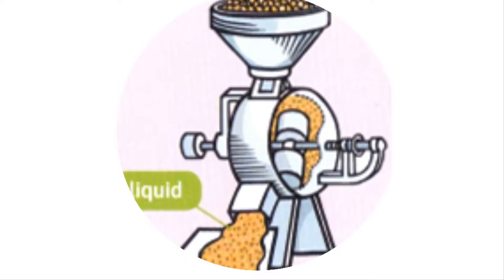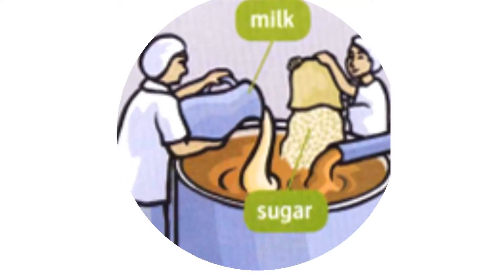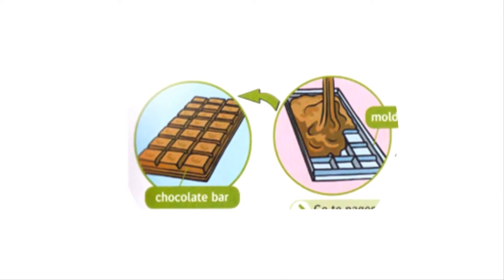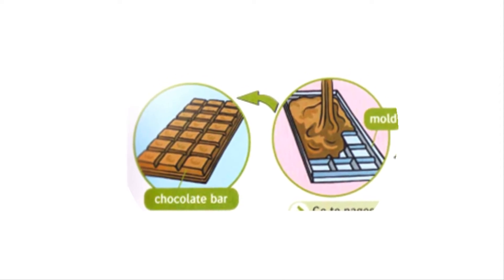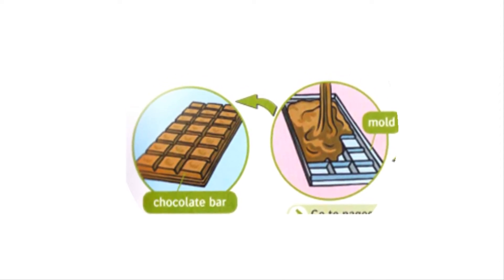Machines grind and heat the seeds, and then the seeds become a liquid. Then people cook this liquid with sugar and sometimes milk. They put the liquid in moulds to make chocolate bars.